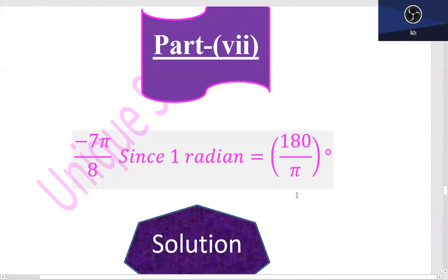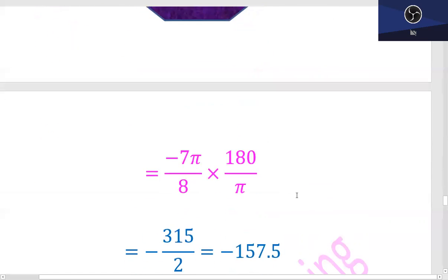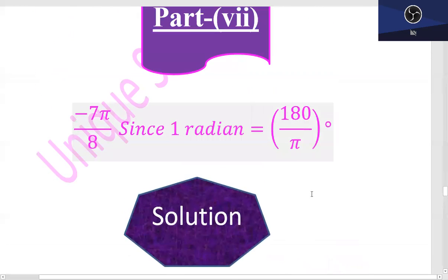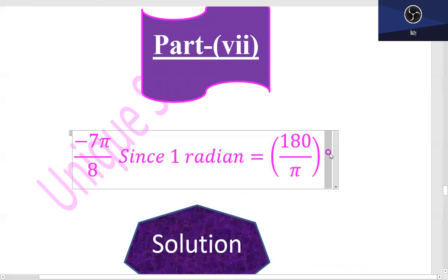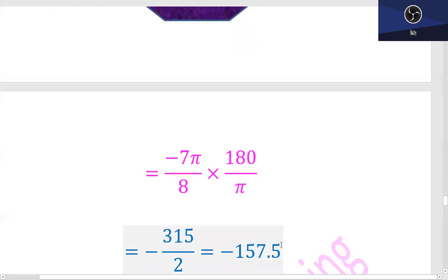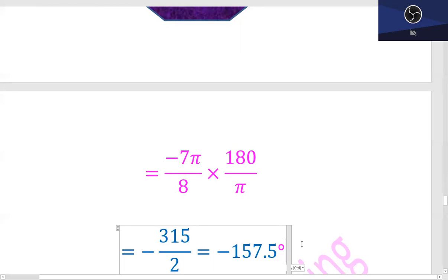Part 7: minus 7 upon 8 π. So, −7π/8 multiplied by 180/π — pi with pi cancels out. Then 315 divided by 2, with the negative sign, gives −157.5 degrees as the answer.